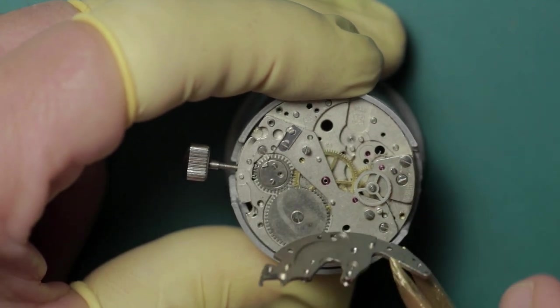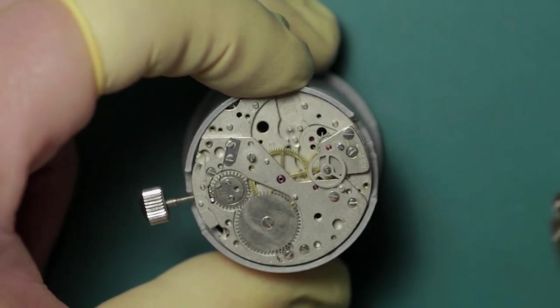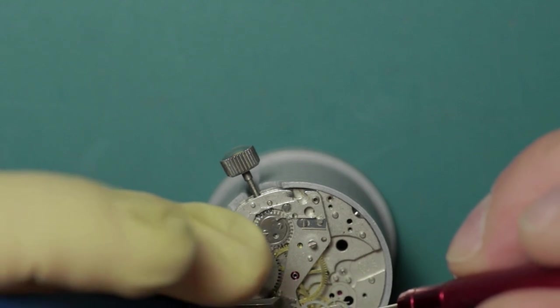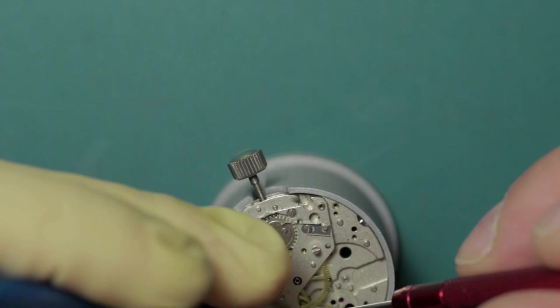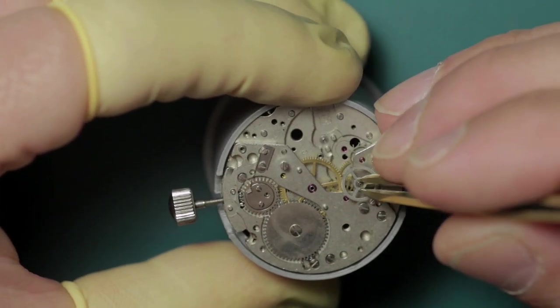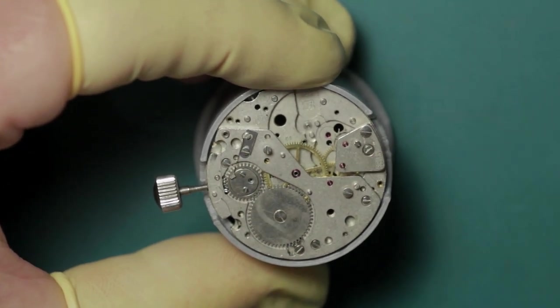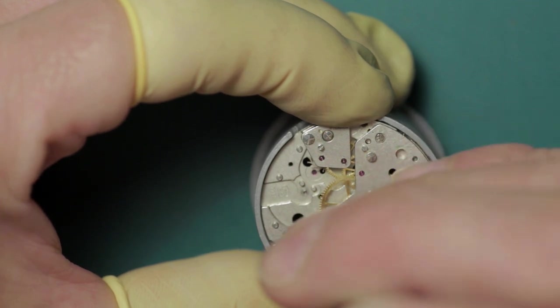Once that's lifted away, the only remaining component is the chronograph driving wheel on the extended pivot of the fourth wheel. Unfortunately I'm a little off the screen here so my apologies, but here I'm just using two small pairs of hand levers, or a small pair of hand levers rather, to lift that evenly up and away from the extended pivot. There is a specific presto tool for that of course.